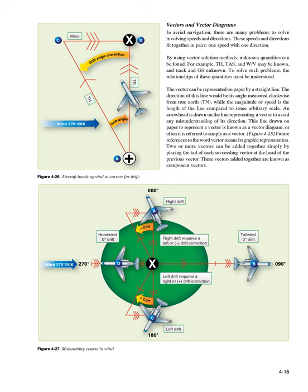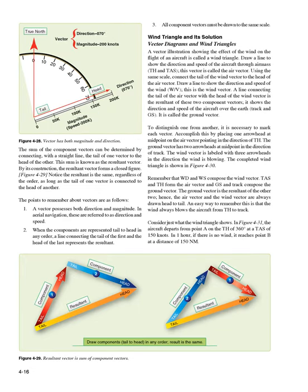Two or more vectors can be added together by placing the tail of each succeeding vector at the head of the previous vector. These vectors added together are known as component vectors. The sum of the component vectors can be determined by connecting, with a straight line, the tail of one vector to the head of the other. This sum is known as the resultant vector. By its construction, the resultant vector forms a closed figure. Figure 4-29. The resultant is the same regardless of the order, as long as the tail of one vector is connected to the head of another.